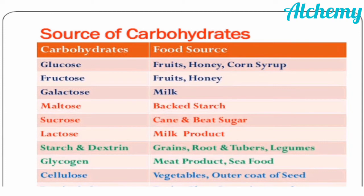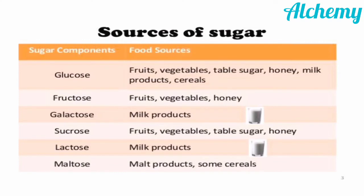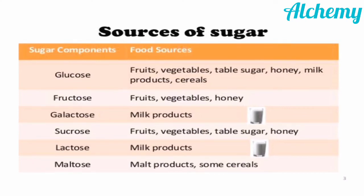Important sources of carbohydrates include bananas, sugar, milk, bread, cereals, roots, and tubers. Glucose is present in fruits, vegetables, sugar, honey, milk, and cereals. Fructose is present in fruits, vegetables, and honey. Galactose is found in milk products. Sucrose is found in fruits, vegetables, table sugar, and honey. Lactose is found in milk. Maltose is seen in malt products and cereals.